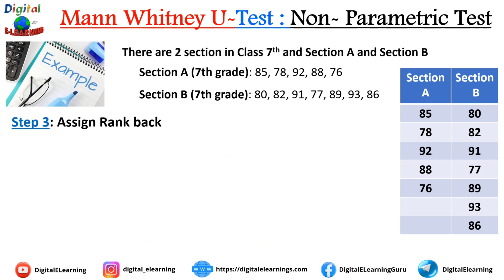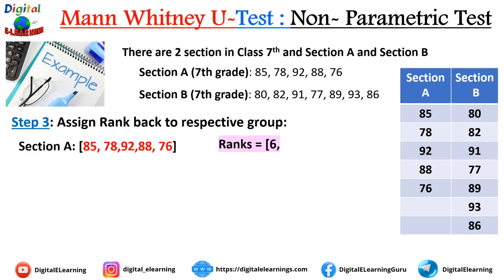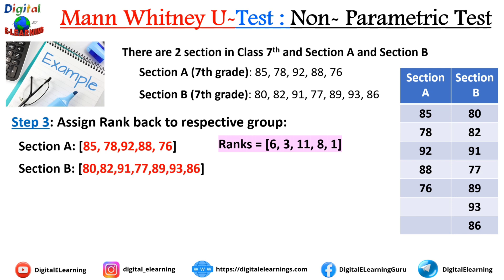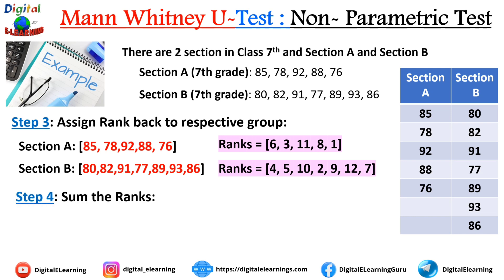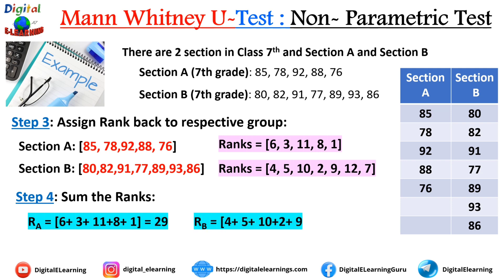Step 3: assign the ranks back to their respective groups. Section A has its scores and corresponding ranks from Step 2. The same is done for Section B. Step 4: sum the ranks. For R_A (rank sum of Section A), we add 6 + 3 + 11 + 8 + 1, which equals 29. For R_B (rank sum of Section B), we add 4 + 5 + 10 + 2 + 9 + 12 + 7, which equals 49.